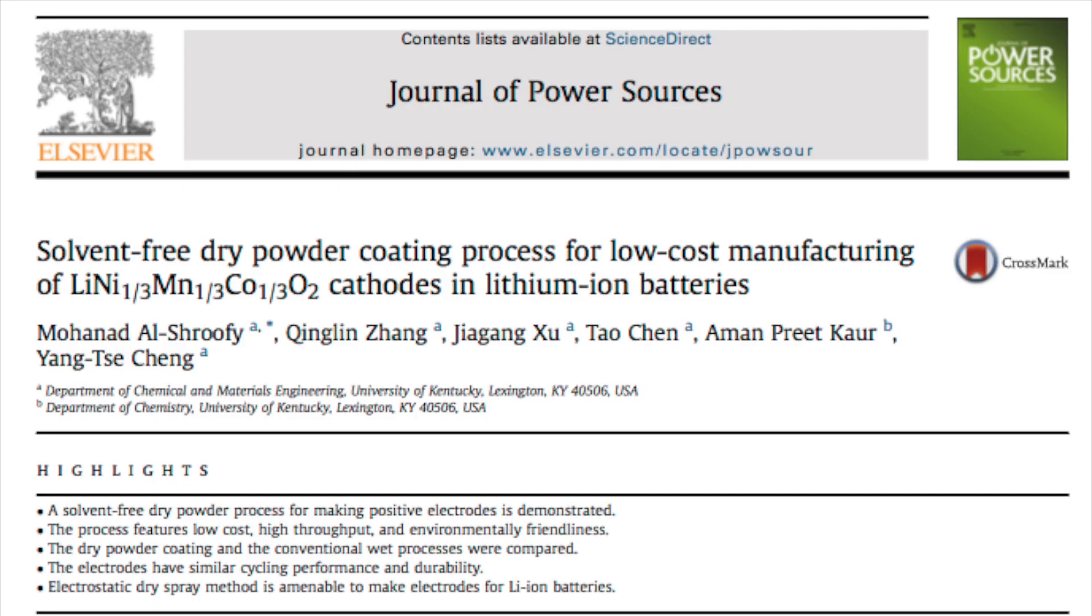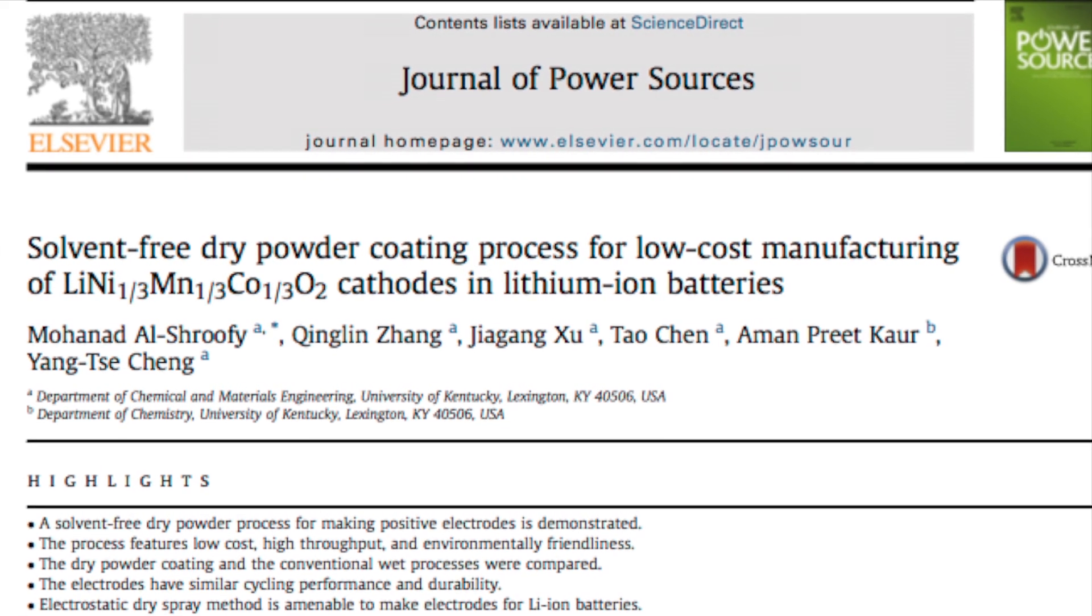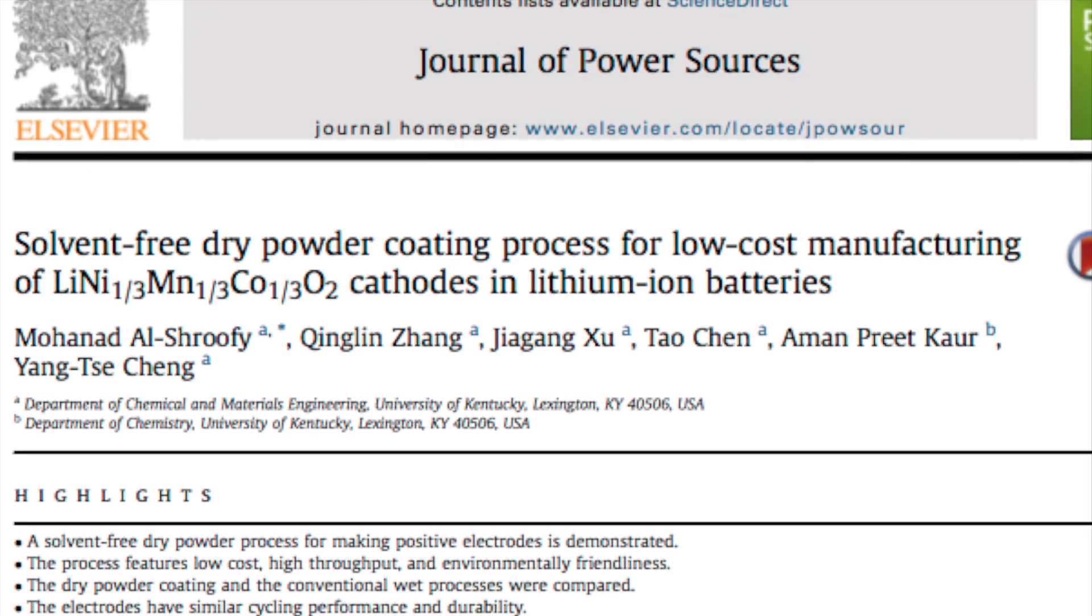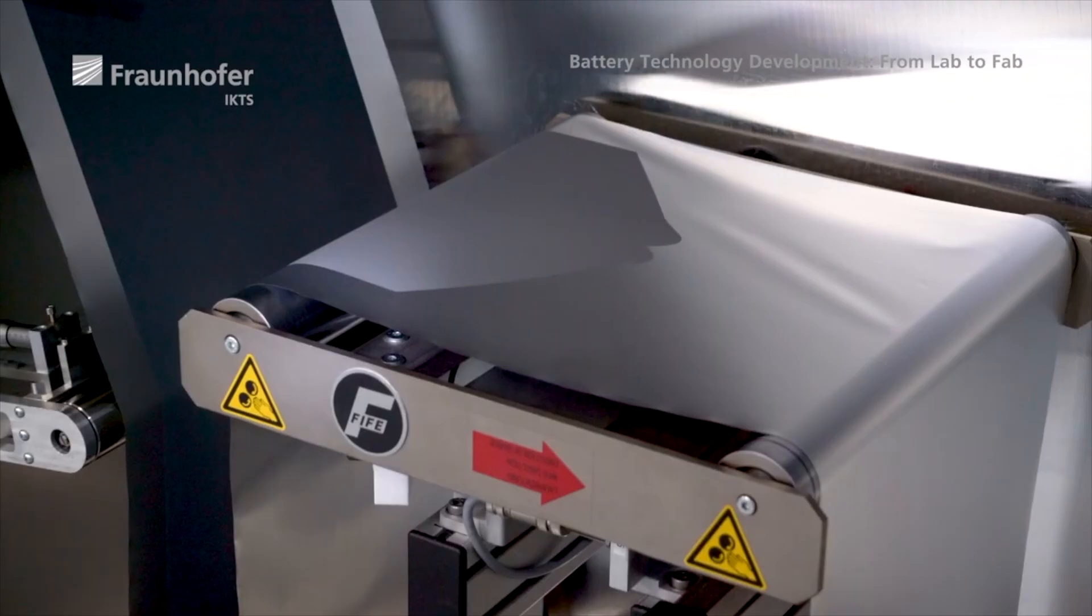There are several studies which go into these details. In one study by Al Shrufi et al. at the University of Kentucky, researchers made an NMC cathode using a dry coating process. The method of fabrication they used to apply the dry active materials was electrostatic dry powder coating, followed by preheating the electrode to 170 celsius, and then running through calendaring rollers.